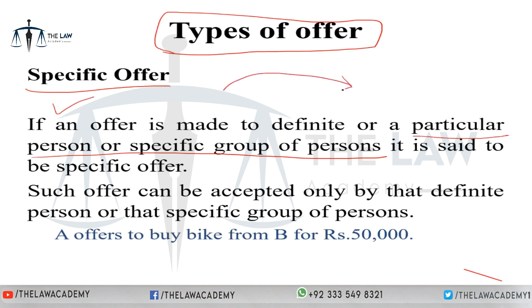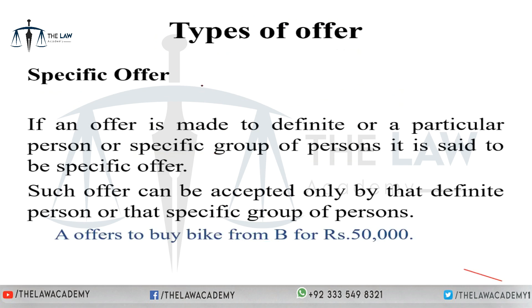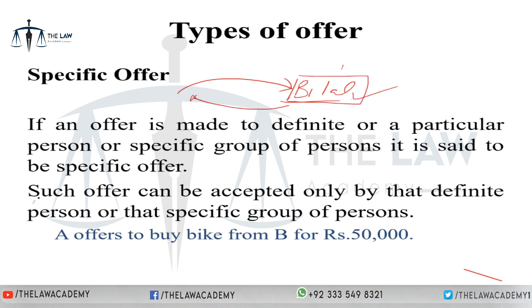If you are making an offer to some particular person who has a legal identity, then it's a specific offer and just that person can accept. For example, if I make an offer to Bilal that I want to sell my car or mobile phone, this offer is only valid for Bilal — not for any other person. Such offers can only be accepted by a definite person or a specific group of persons. Nobody else can accept it and seek a contract.